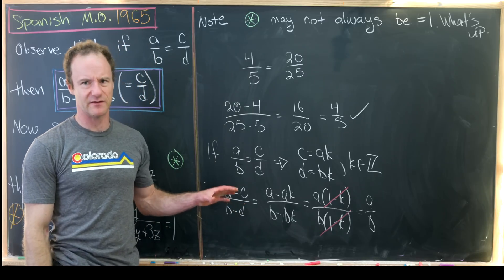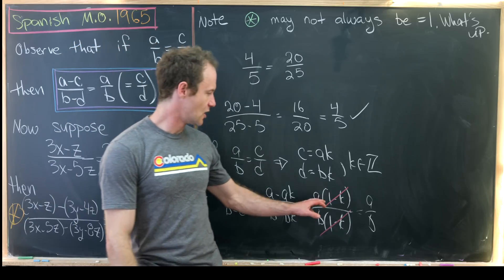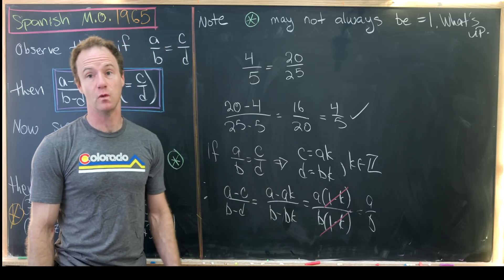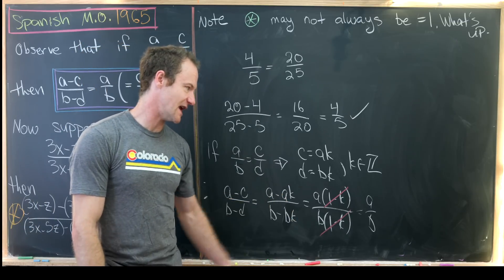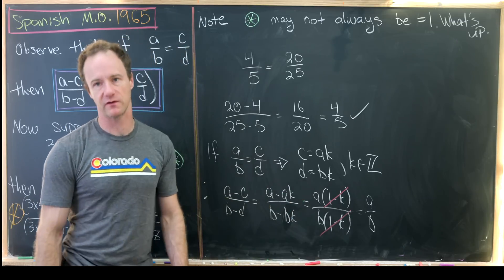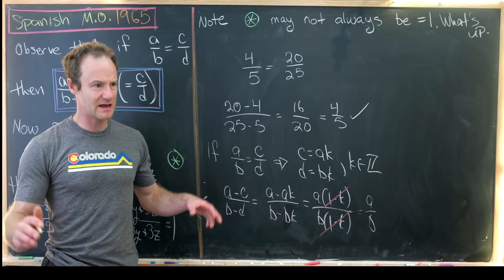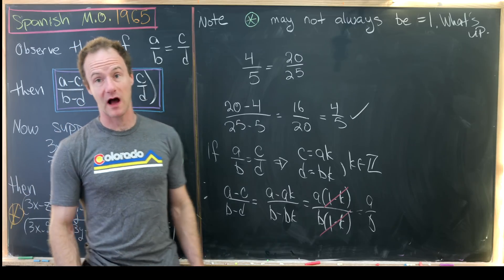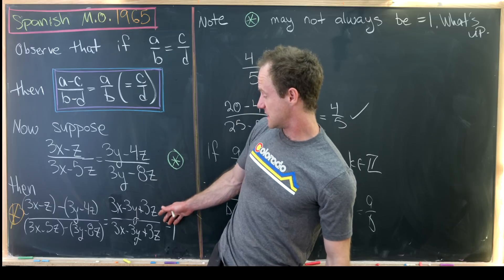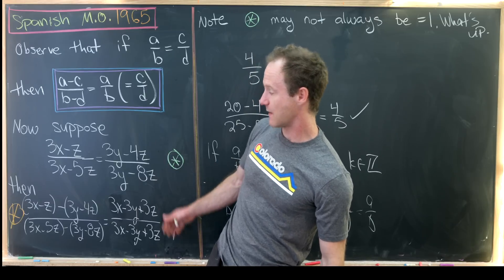But you should have kind of a siren going off in your head. What happens if K is equal to 1? Then this doesn't really make any sense because we have 0 over 0. And that's sort of the problem that we'll see in this thing that's happening over here.